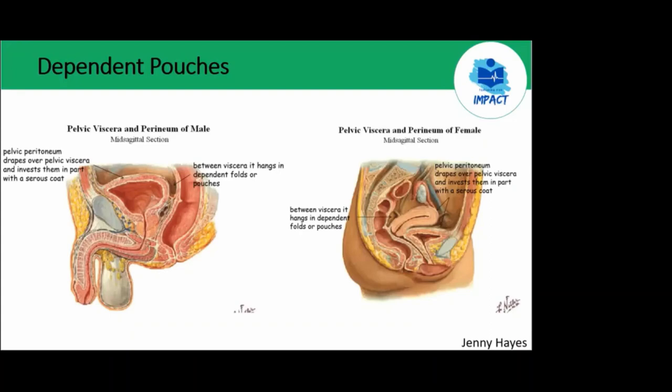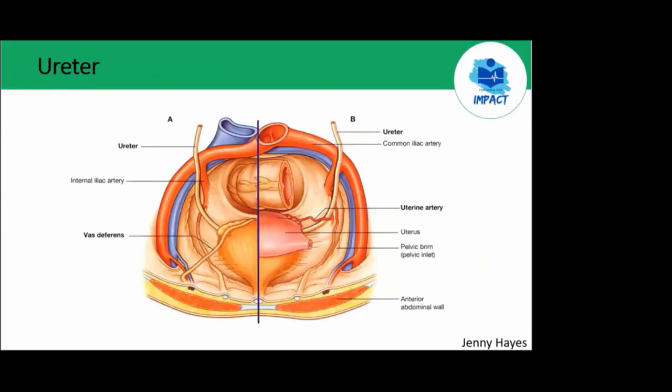If you were to insert two fingers into the vagina, the tip of the fingers will be directly related to the pouch of Douglas, and you can feel whether there is free fluid there. Normally the uterus is anteverted and anteflexed. Anteversion means the long axis of the uterus is bent forward on the long axis of the vagina against the urinary bladder, while anteflexion indicates the long axis of the body of the uterus is bent forward on the long axis of the cervix.